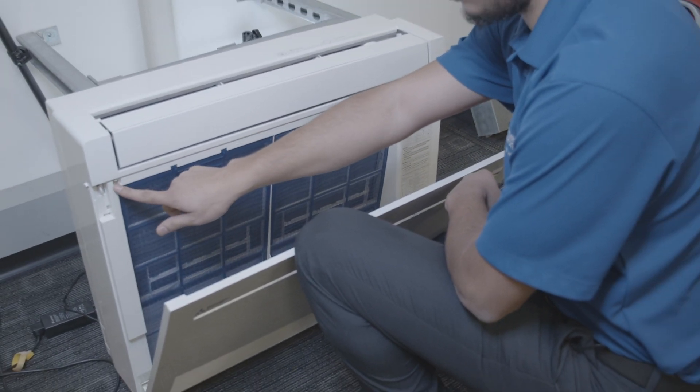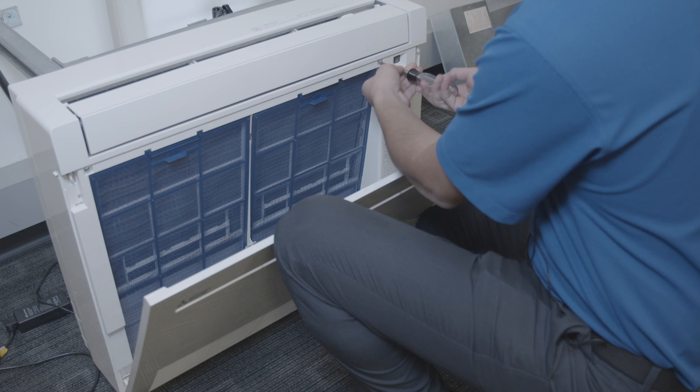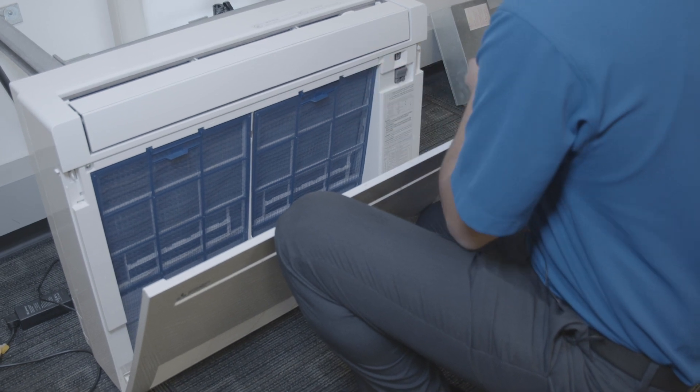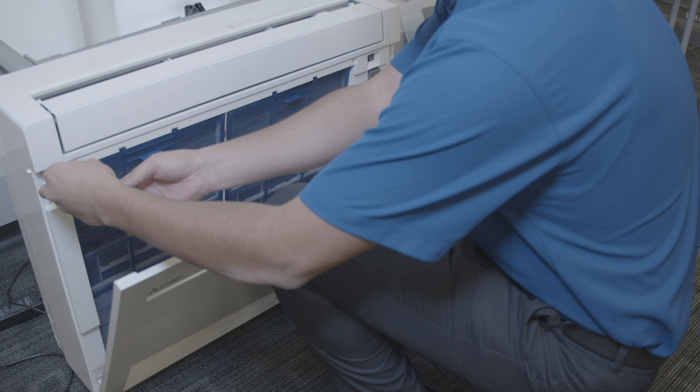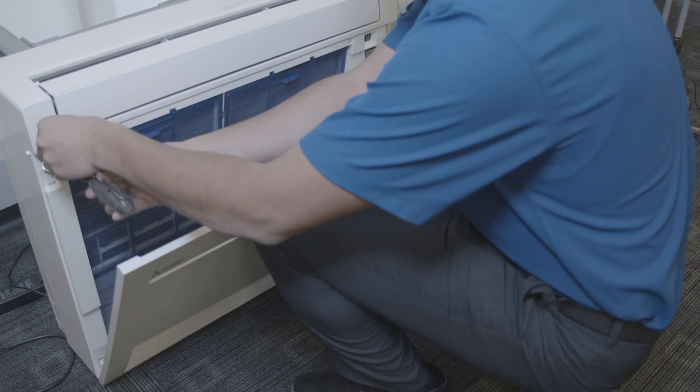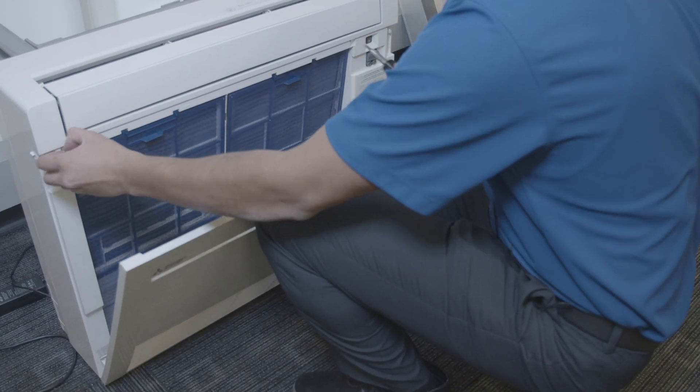Behind the cabinet you will find screws that hold the front panel in place. After removing the screws, simply pull the panel assembly to remove.